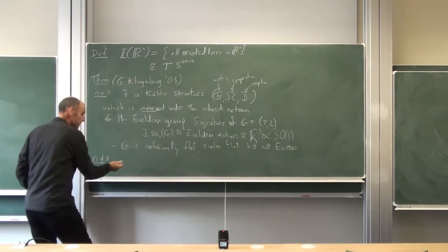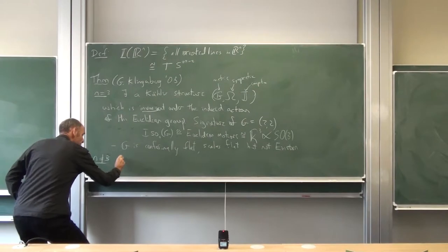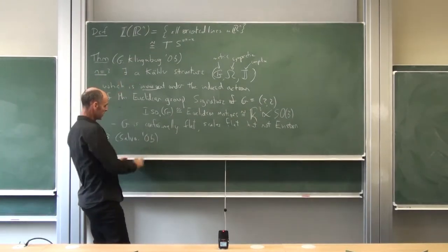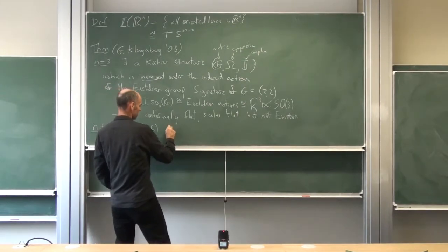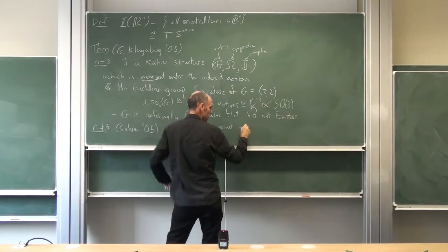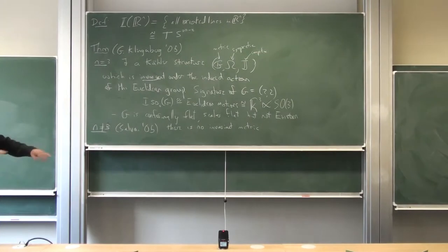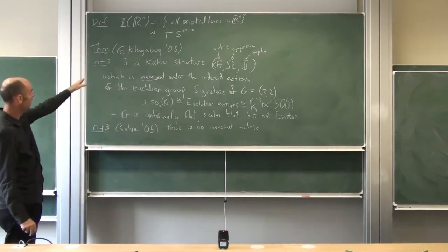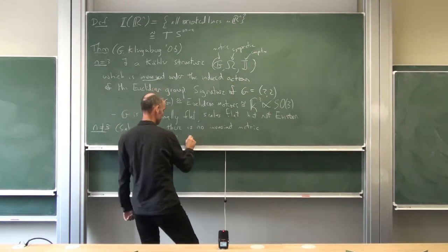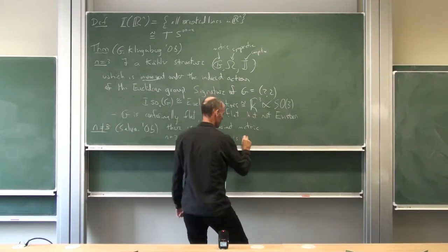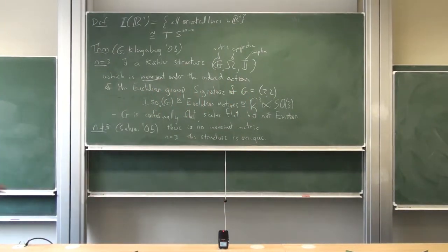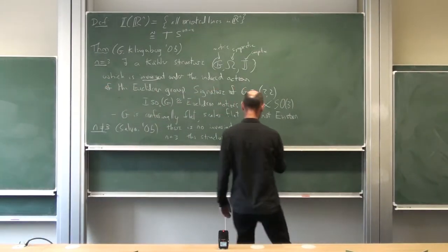What happens for n not equal to 3? Subsequently it was shown that this doesn't exist — it only exists in dimension 3. A paper showed two things: first, there is no invariant metric for n=4, 5, or 6, and for n=3 this metric is unique, essentially up to addition of a spherical factor. So it doesn't exist in any other dimension.